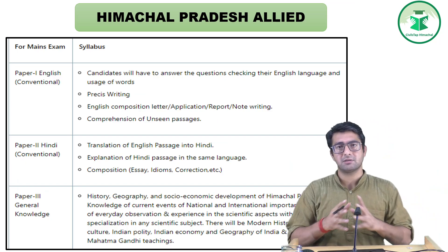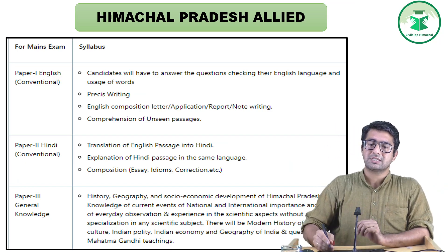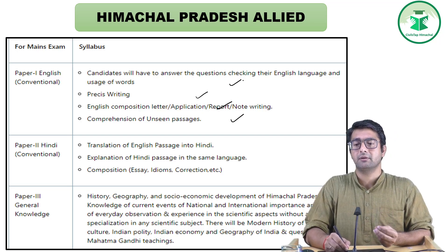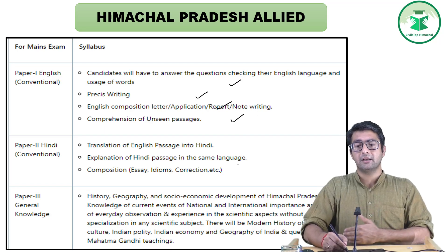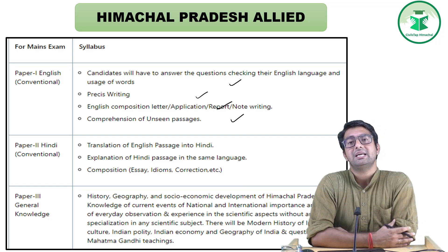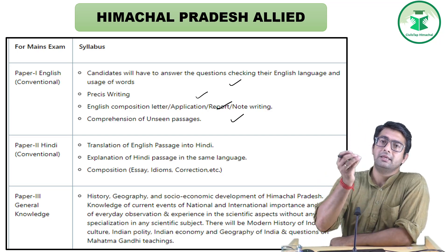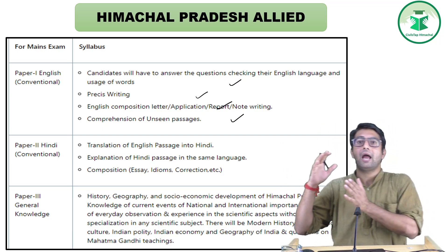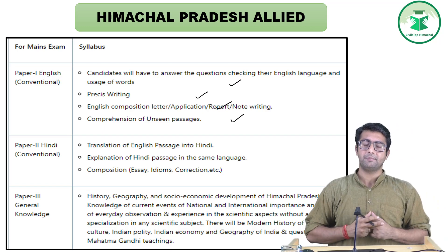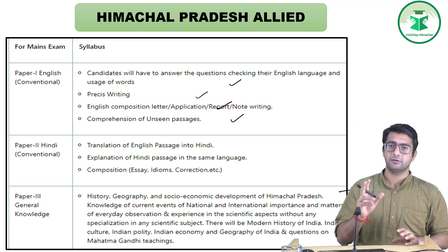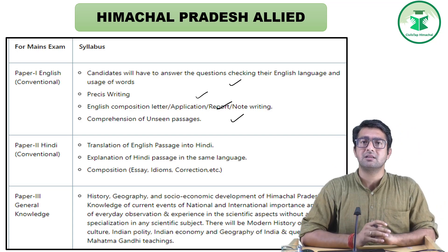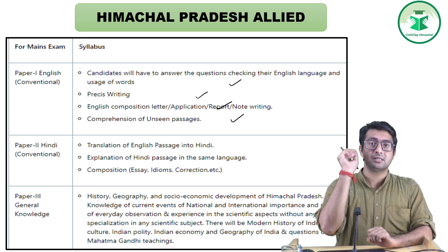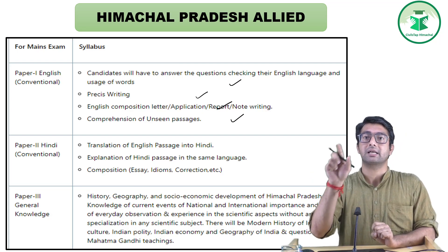Mains में GS का syllabus वही है जो prelims में पढ़ा था, लेकिन यहाँ analysis important है। English का syllabus: Précis writing, Report writing, Letter writing, Comprehension, और Grammar। Hindi में भी वही format है। GS में हम prelims और mains दोनों perspectives से पढ़ाते हैं — थोड़ा heavy level पर, क्योंकि दो साल पहले Allied का syllabus और pattern बदला है।